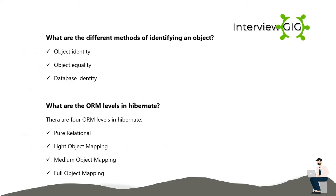What are the different methods of identifying an object? Object identity, object equality, and database identity.